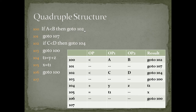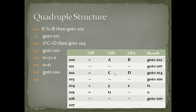At address 100, the result is go to 102. At address 101, there are no operator, operand1, or operand2 — we write dashes — but the result is go to 107. At address 102, operator is less than, operands are c and d, and the result is go to 104. At address 103, there is no operator or operands; the result is go to 100, and the remaining entries are dashes.